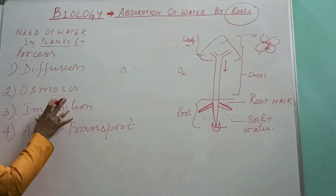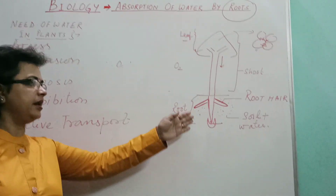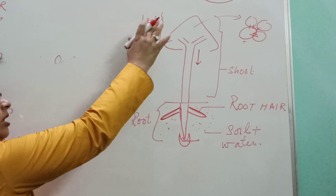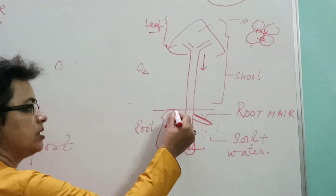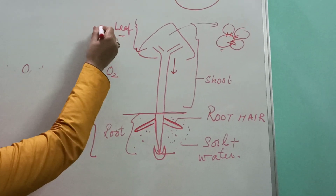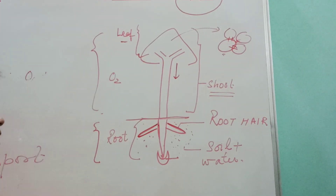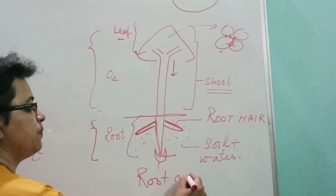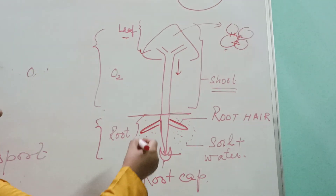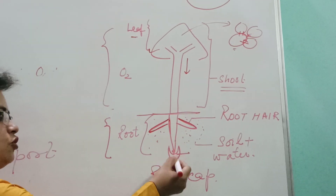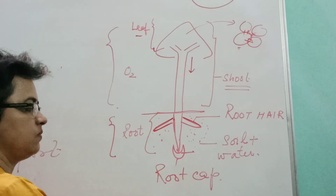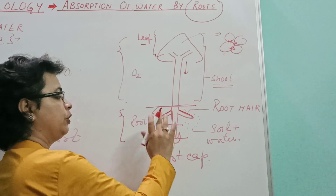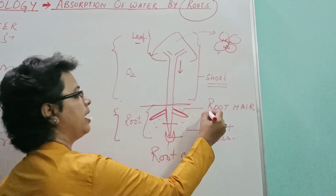Before defining these terms, we should know the adaptations by which the root is prepared to absorb water. In this diagram, you can observe the root is inside the soil — this line is the demarcation; soil is on this side, and the portion outside the soil is the shoot. At the very tip of the root moving downward, there is the root cap. This portion of the root never absorbs water; its main task is to make way and protect the tip of the root while moving downward. Just above the root cap, a little portion also does not absorb water. The portion of the root which absorbs water is known as root hair.